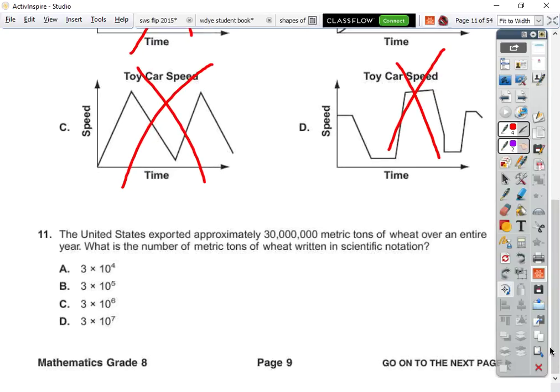The United States exported approximately 30 million metric tons of wheat over the entire year. What is the number of metric tons of wheat written in scientific notation? Well that's one, two, three, four, five, six, seven.